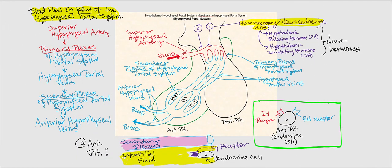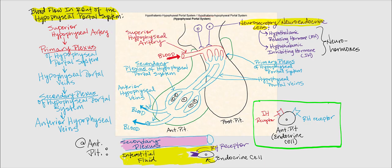Let's now discuss what's called the hypophysioportal system, also referred to as the hypothalamic hypophysioportal system or hypothalamo-hypophysioportal system. For simplicity, we'll refer to it as the hypophysioportal system. This represents the relationship between the hypothalamus and the anterior pituitary, or the anterior lobe of the pituitary gland. To orient yourself, look for the optic chiasm — that way you know what's anterior versus posterior. We'll begin by looking at blood flow in and out of this system.